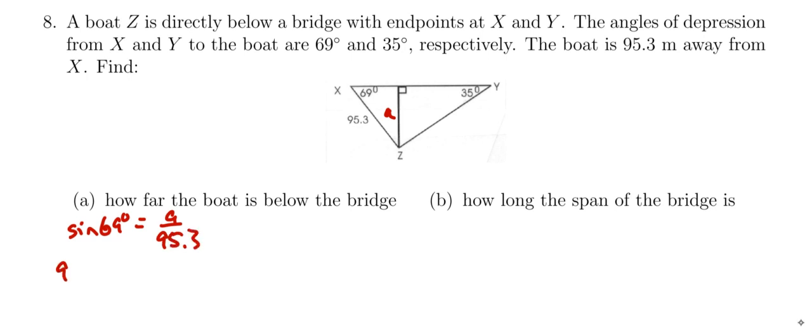Which means if I multiply that across here, 95.3 times the sine of 69 degrees will equal A. So on my calculator, 95.3 times the sine of 69. And I get that A is 89.0 when I round it to the nearest tenth.